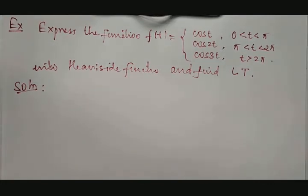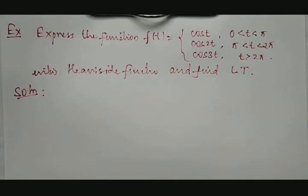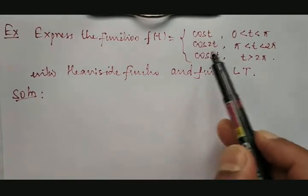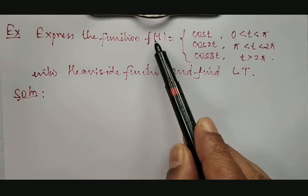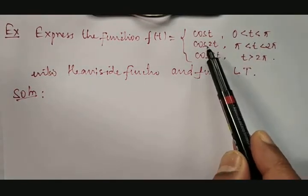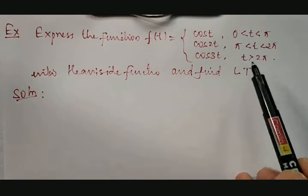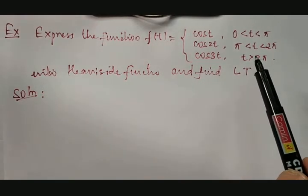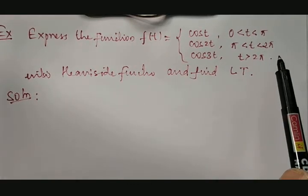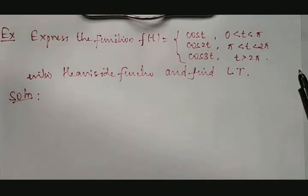In this session, we are going to discuss an example where we are going to obtain the Laplace transformation of the triple-valued function: f(t) = cos t between 0 to π, cos 2t between π to 2π, and cos 3t between 2π to ∞. We are going to convert it into a Heaviside function, then find its Laplace transformation.